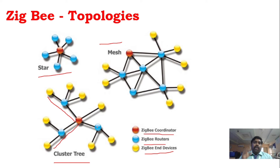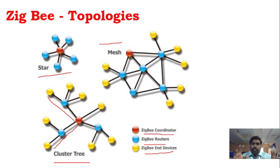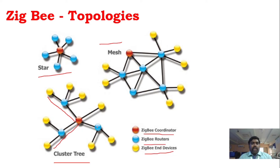Mesh is a very important topology in Zigbee, especially for industrial applications. In mesh topology, a mesh is created where you can connect with all nodes. A coordinator can communicate with many routers, and end devices connect with other end devices. These are the three important topologies of Zigbee.